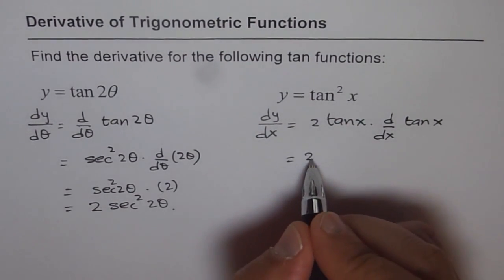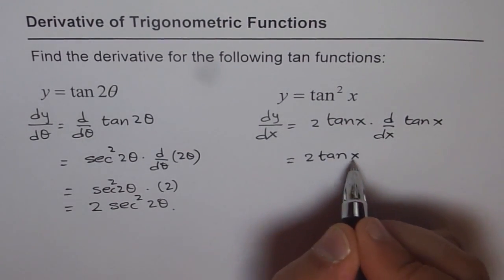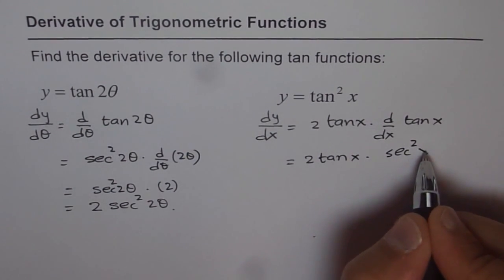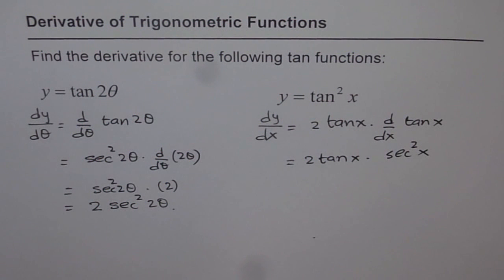So we get 2 tan x, and the derivative of tan x is sec² x. So that is our answer.